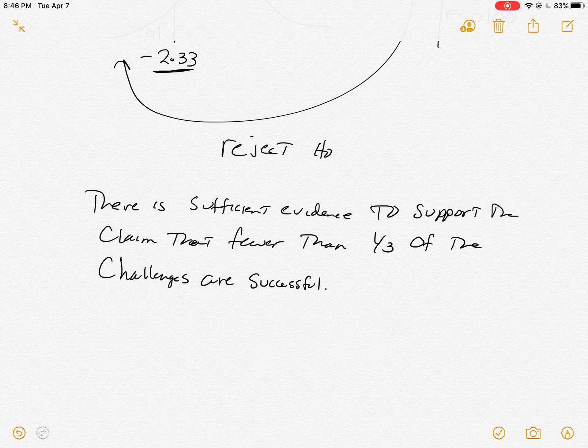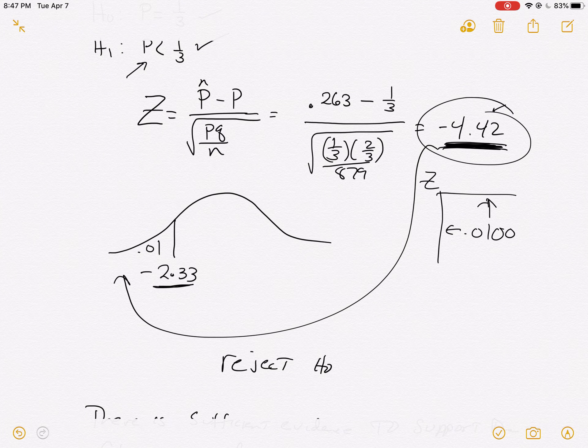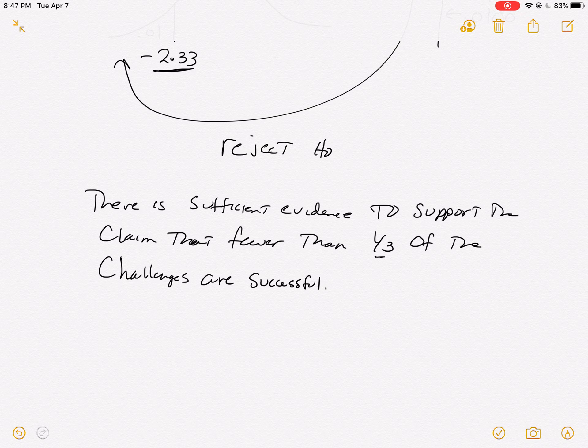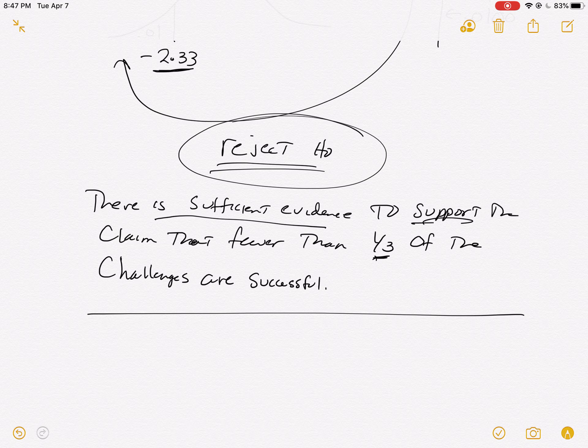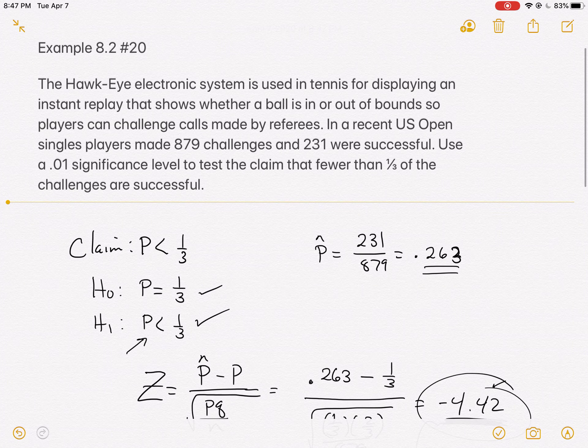Which means that the referees are getting that right more than two-thirds of the time, so players don't really have a good sense of what's in and out as they're playing the game, probably because their perspective changes. You can make an argument that 26% is a lot of times to be wrong, but you could also make the argument that more than two-thirds of the time, we're right. This is how the problem would conclude - because you're able to reject the null hypothesis, there's going to be sufficient evidence to support that claim, and then you just restate that claim. That's what a full problem looks like as you do one in the 8.2 section.